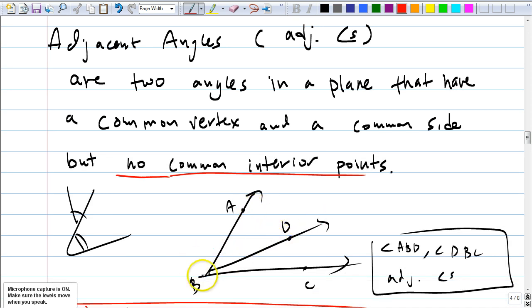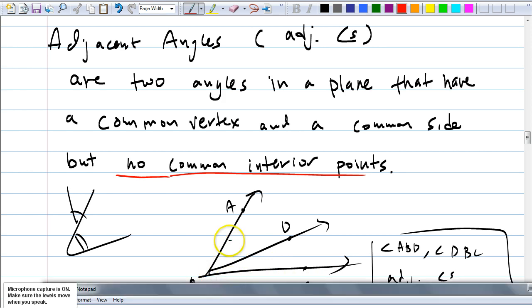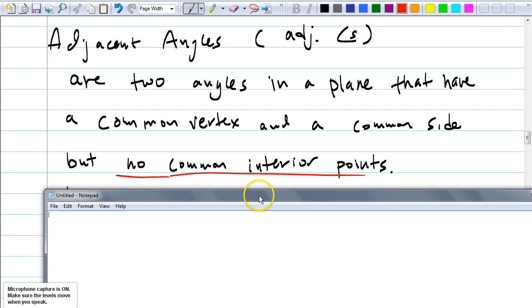If I just do this, wouldn't it give you these two adjacent angles like angle ABD and DBC. Aren't they adjacent angles? They have a common vertex and common side. So why is it that we need this statement at the end, but no common interior points?